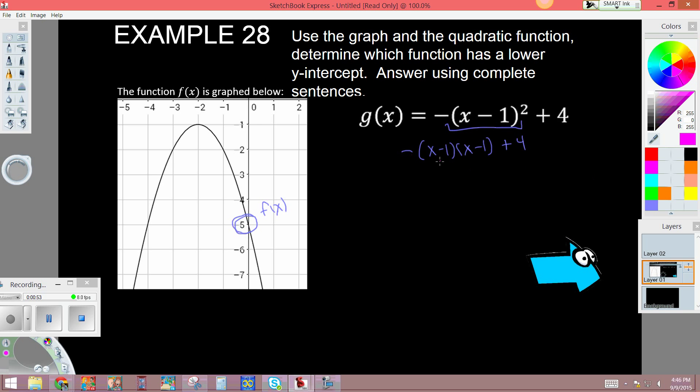We FOIL this out. First, x times x, which is x squared. Then we do 1 times x and negative 1, so I get negative 1x. Now I go to negative 1 and distribute it, and I get negative 1x. Then negative 1 times negative 1, and I get positive 1.